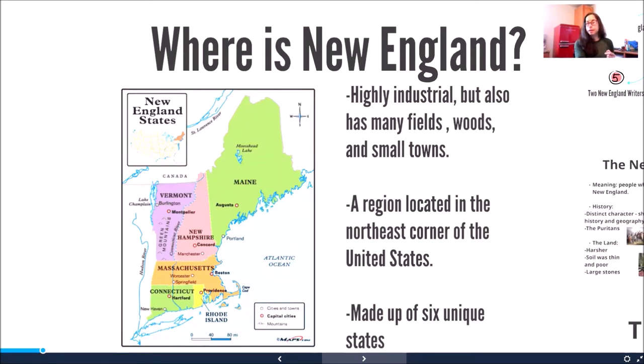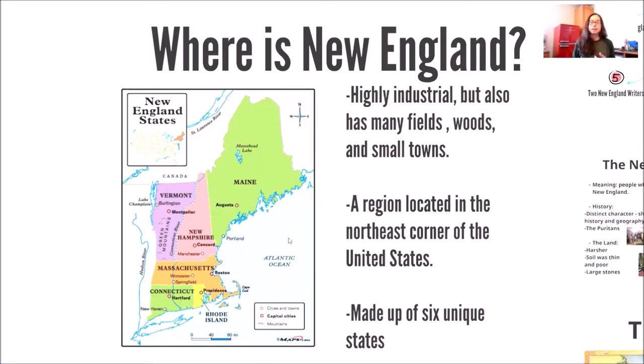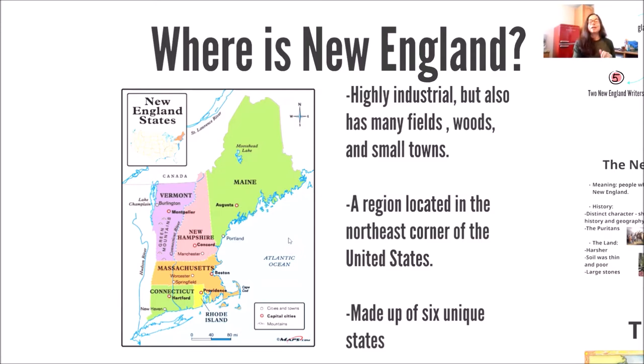We're going to be talking about Just David as well as Harriet Tubman — our next book — when we get to our live classes. The book Just David is set in New England, and that's what we're going to talk about this week for geography. New England includes Maine, New Hampshire, Vermont, Massachusetts, Rhode Island, and Connecticut. It's a highly industrial area, but it also has many fields, woods, and small towns. It's located up in the northeastern corner of the United States and made up of those six states.